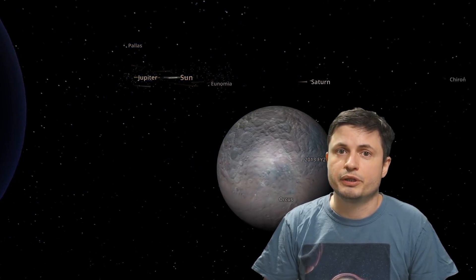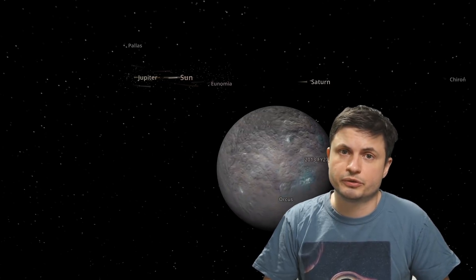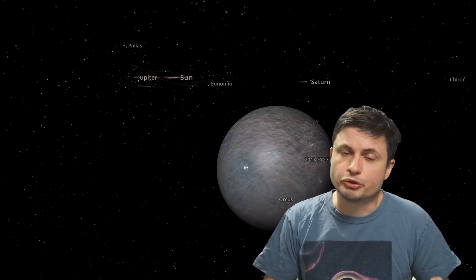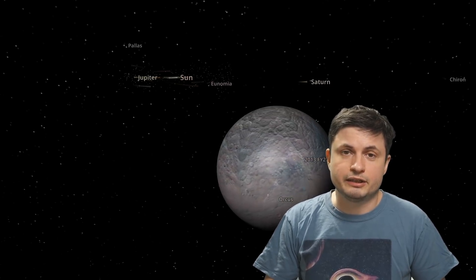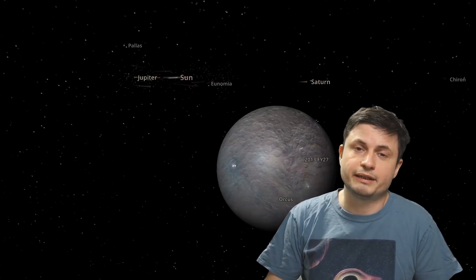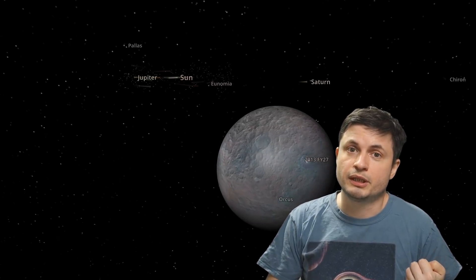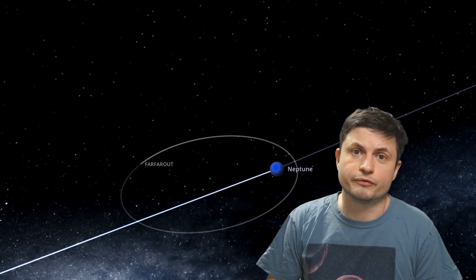Now this also means that at some point very likely in the next few billions of years or possibly even sooner than that it's going to come close to Neptune once again close enough to have its orbit changed and this might mean that it could get kicked out of the solar system or it could end up getting closer to the solar system or possibly even become a new satellite or a new moon of Neptune.